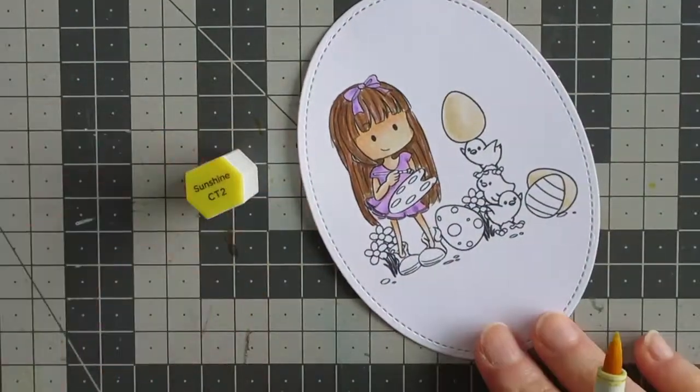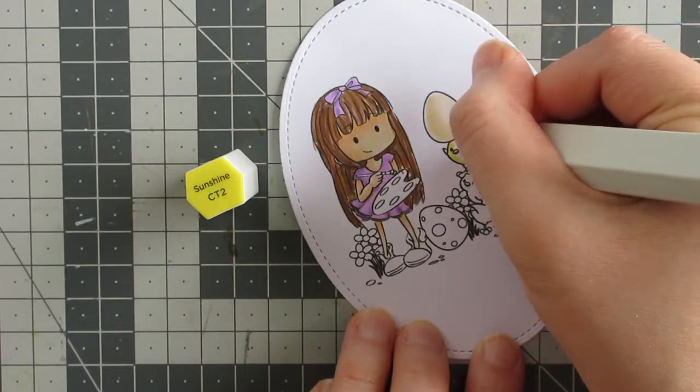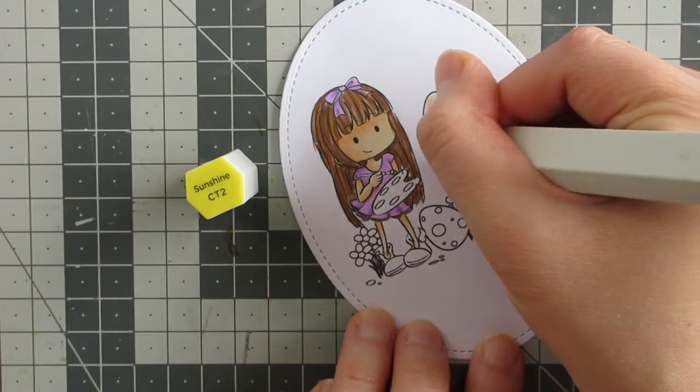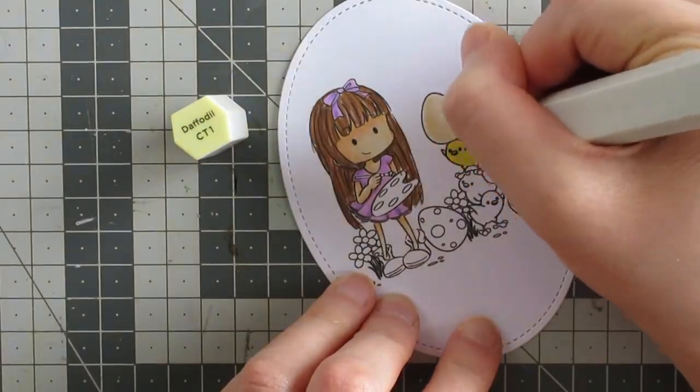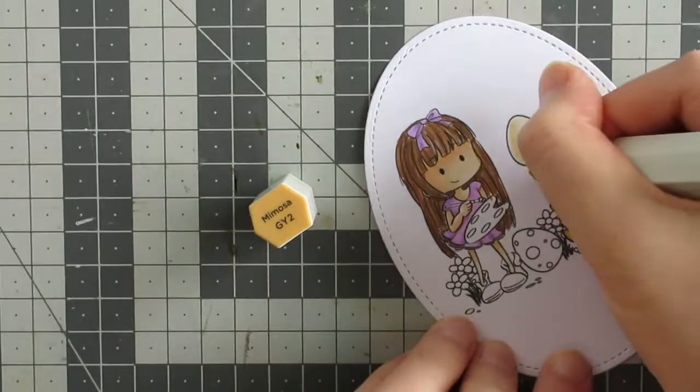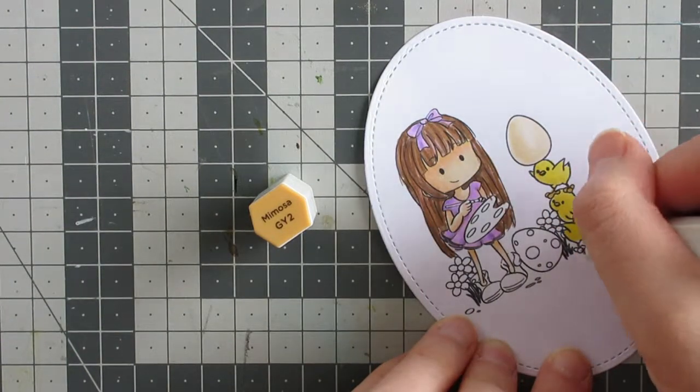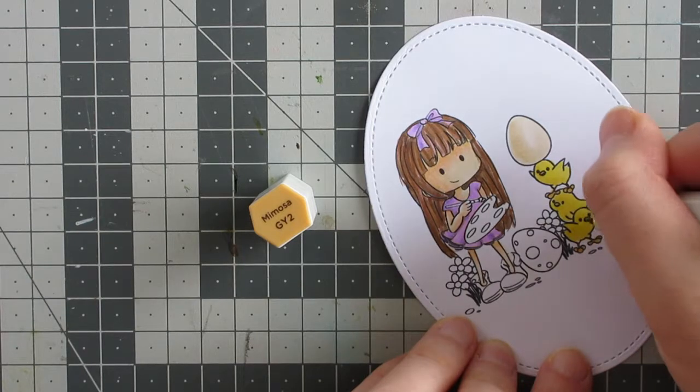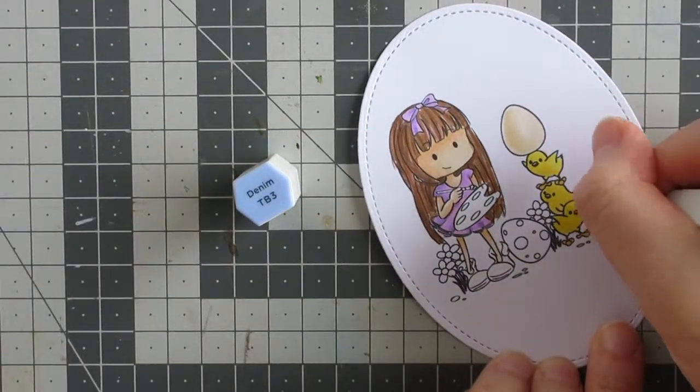Then I'm going to color in the little chicks and I only show the one of them because they're all the same. I'm using two shades of yellow and I'm putting in my shadow first and then the highlight color and I did just color right over the beaks because I knew I would be going in with this darker orangey color which will cover up any of the yellow that got there and then I also used the orange for the feet as well. Then I'm going to color the Easter eggs.